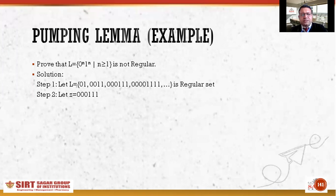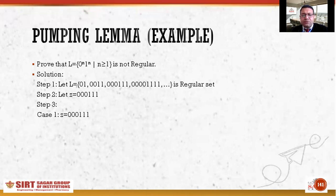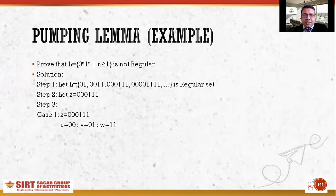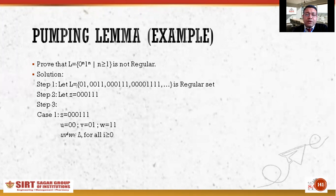I will consider an arbitrary string from L and name it z. I've taken z = 000111 (triple zero, triple one). In the next step I divide it into three parts u, v, and w. For Case 1, I take u = 00, v = 01, and w = 11 — dividing z into equal parts of length two.